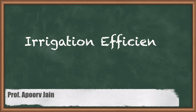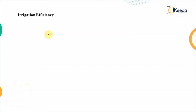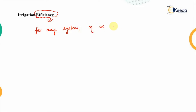Hello everyone, in this video we are going to study about the different types of irrigation efficiencies. The first question is: what is efficiency? For any system, efficiency is defined as the ratio between the input and the output.